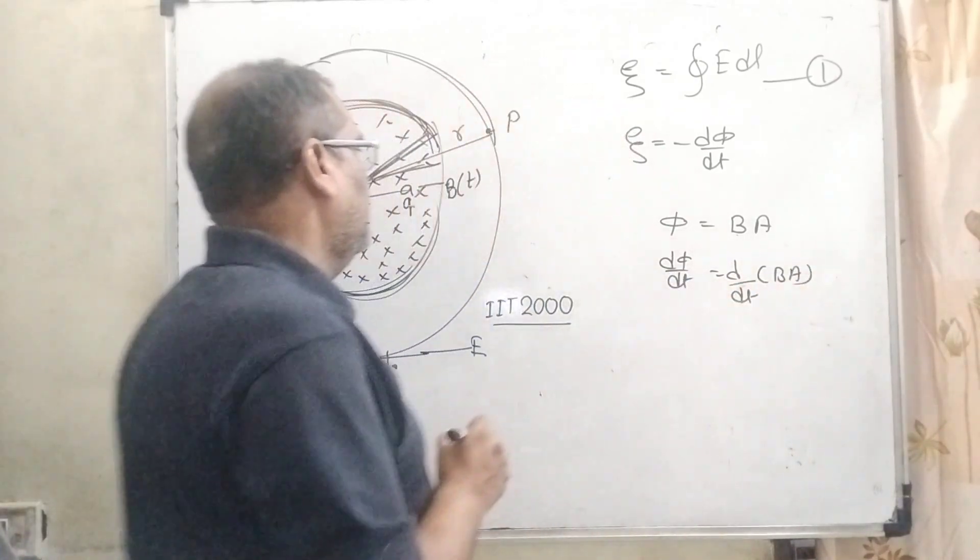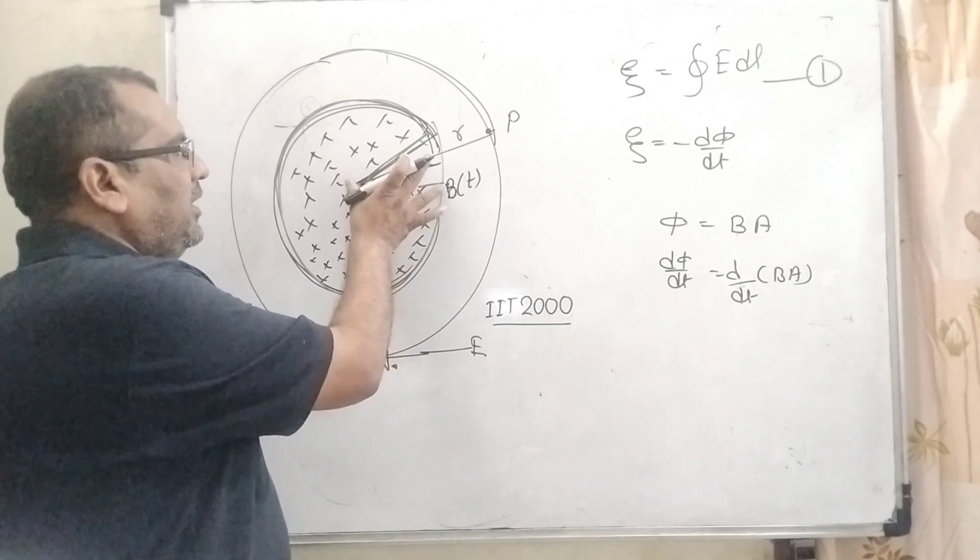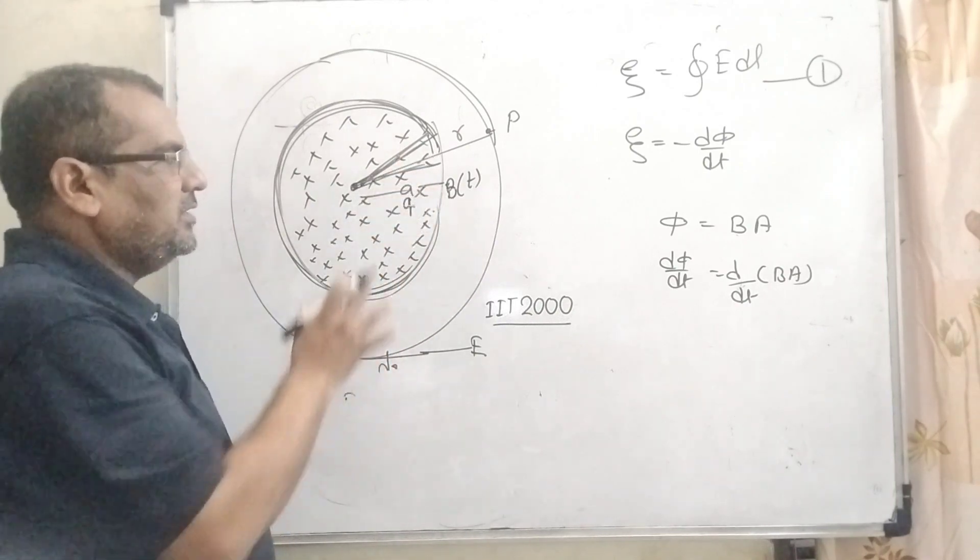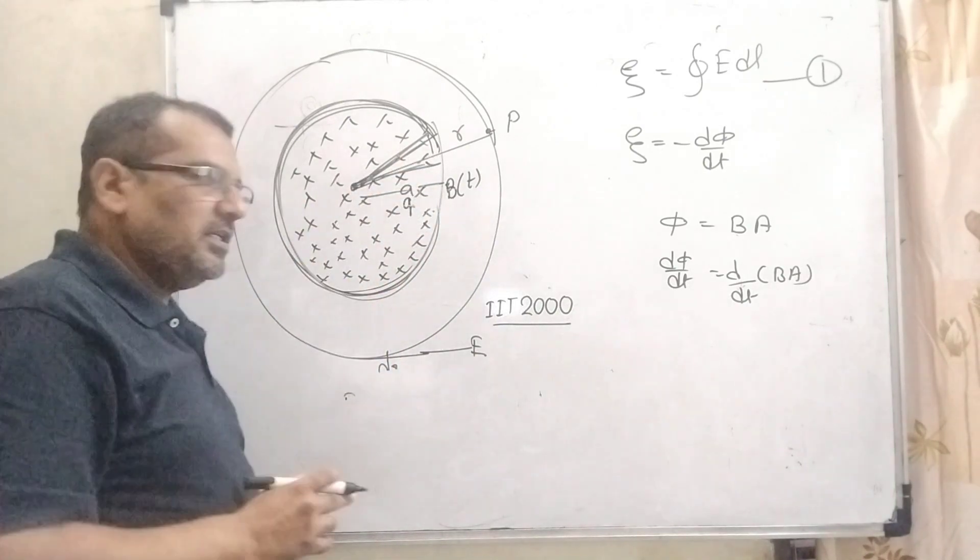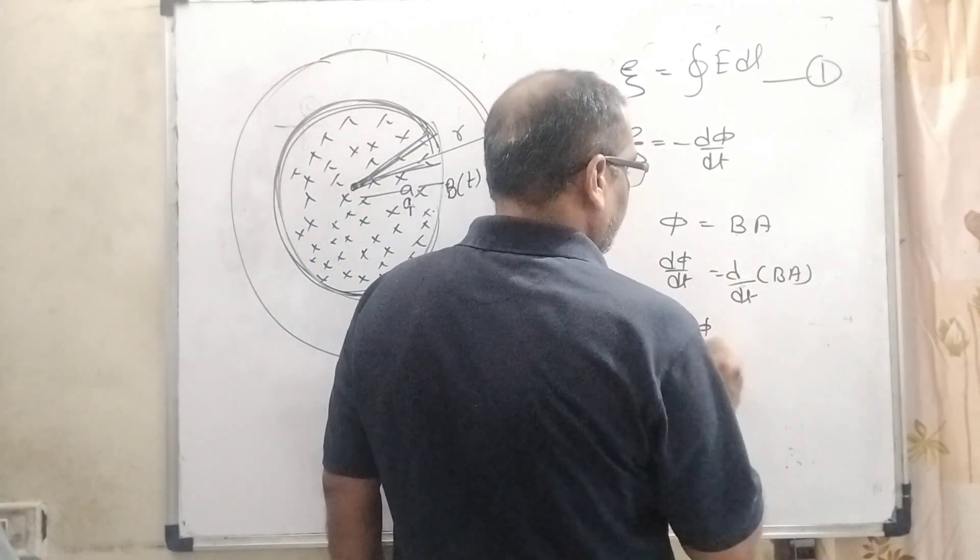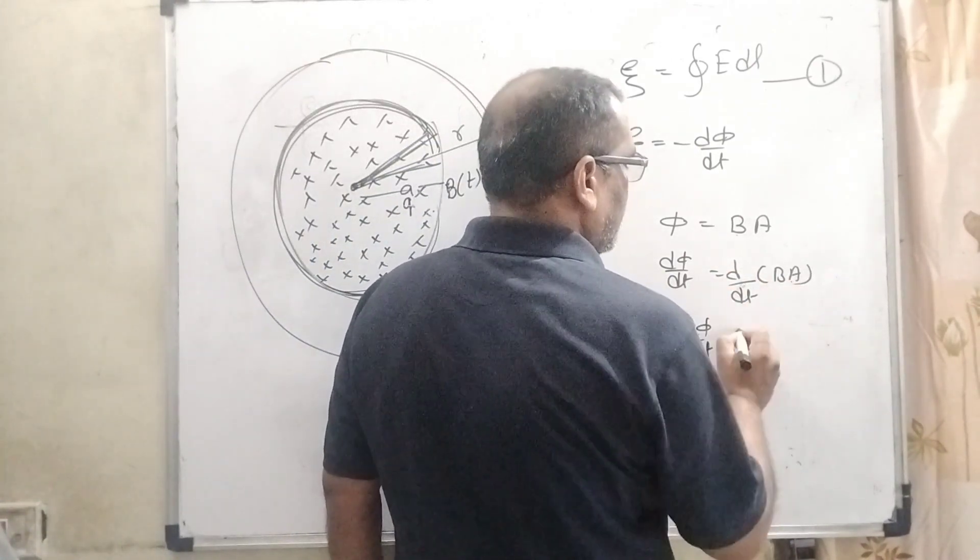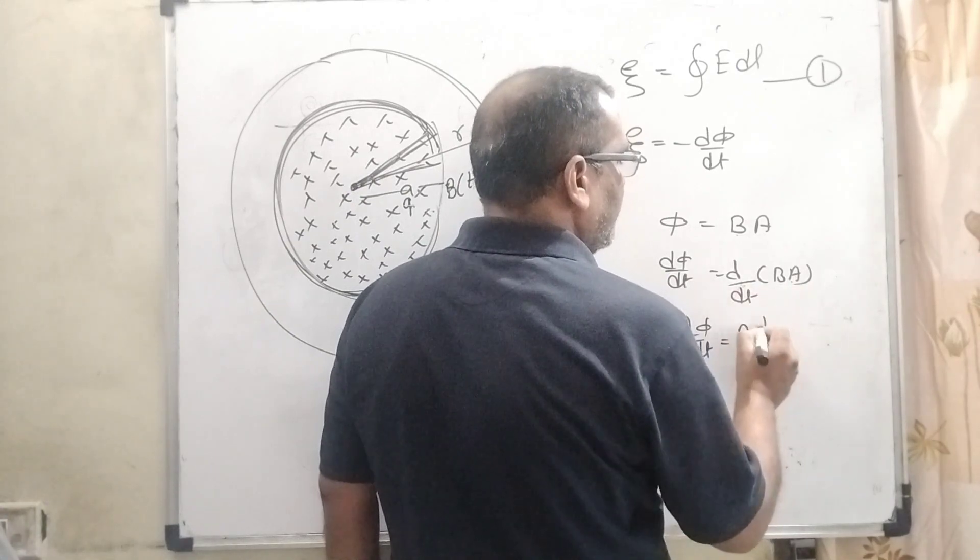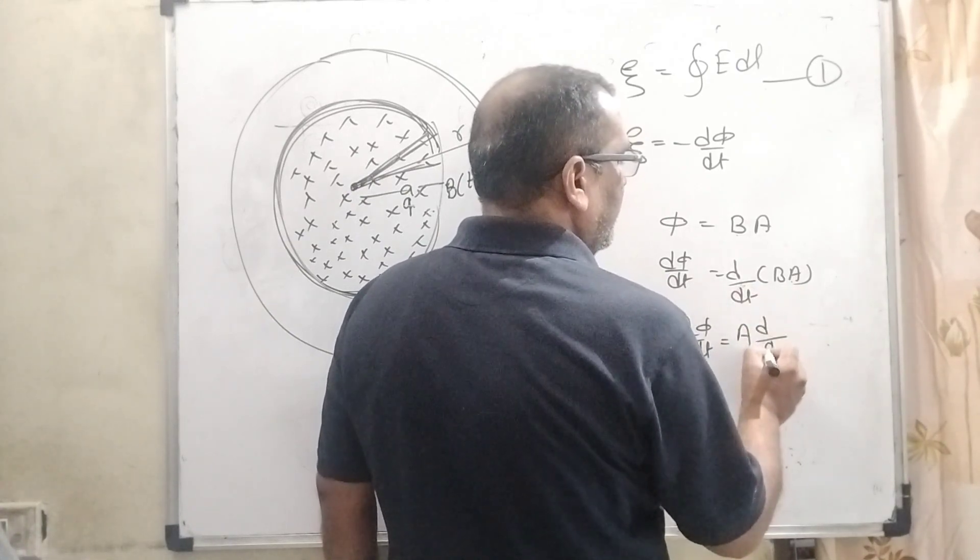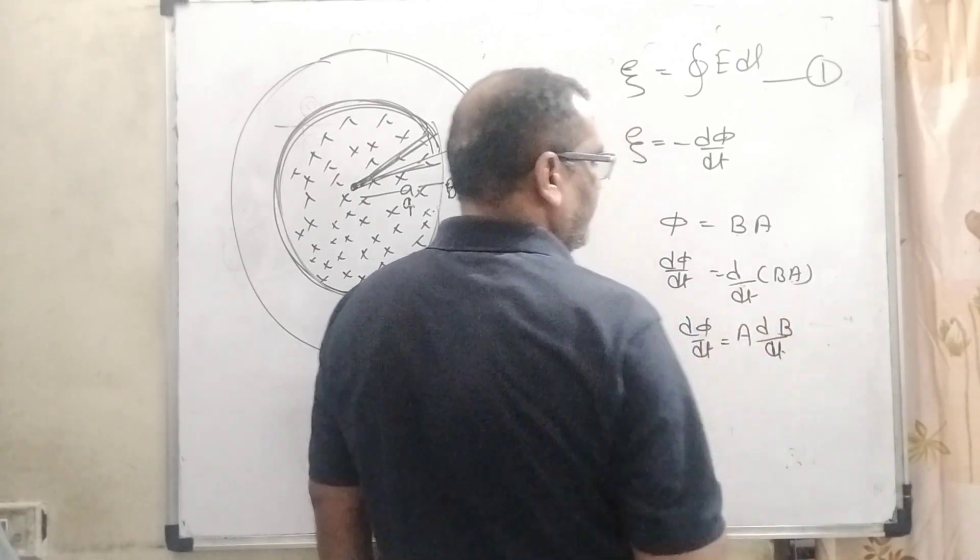Here you can see that this circular loop has an area that is fixed, where the charges exist. Therefore, we can take the constant term A outside of the differentiation: dφ/dt = A·dB/dt.